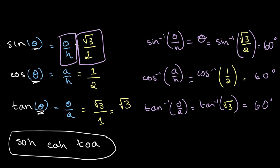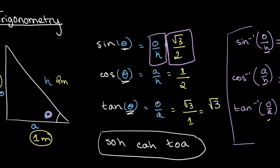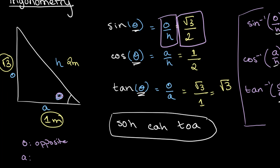Using sine, cosine, and tangent we get the ratios between the sides: O over H, A over H, and O over A. Using the inverses, we plug in those ratios and get the value of theta. O represents the side opposite to theta, A represents the side adjacent or right next to theta, and H is the hypotenuse. This can be remembered using SOH-CAH-TOA. Now let's look at examples on another triangle.